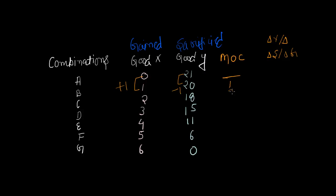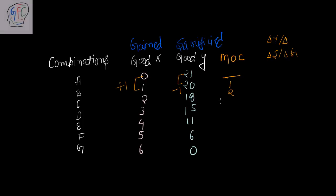Some of you might wonder why I'm only writing 1 and 2, and not minus 1 and minus 2. The minus sign is present but it does not indicate any relevant fact here — it only shows the inverse relationship between Good X and Good Y: as Good X increases, Good Y decreases. You are not required to write the minus sign when calculating MOC. Continuing the calculations: 15 minus 18 is minus 3, so MOC = 3; then 4, 5, and 6.